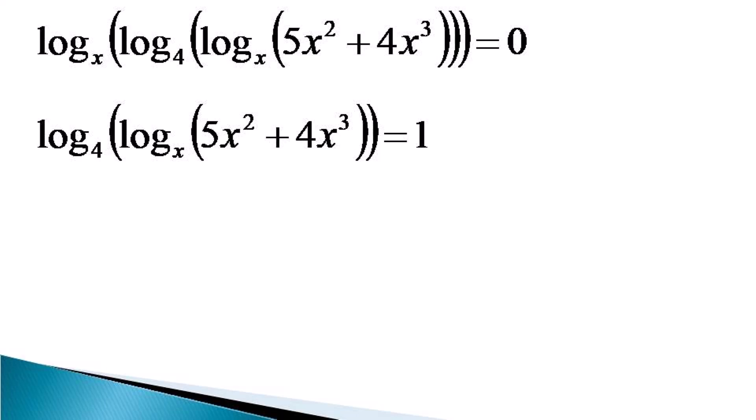And it can equal one when the quantity in the first bracket equals the base of the log. So the quantity log_x(5x² + 4x³) becomes equal to 4.